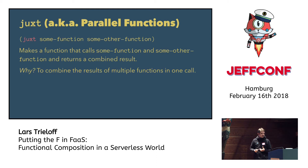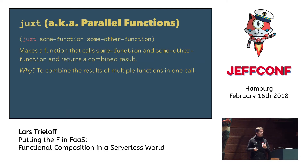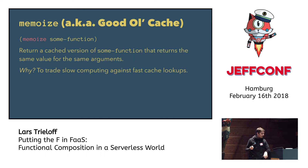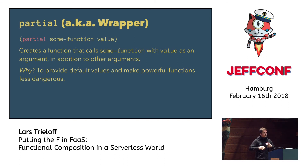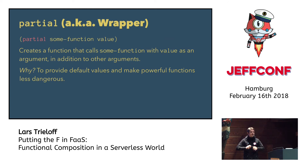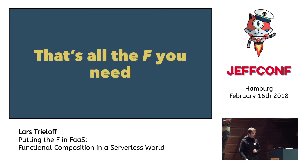We have juxt, which takes two functions and executes them in parallel so you can combine the results of multiple function calls in one single call. Whenever you do all this, you want to increase performance — which is what Clojure calls memoize, and what we call good old caching. Finally, we have the partial function: partial takes an existing function and calls it with a preset value, so you can take a very powerful and flexible function and turn it into something very specific, safe, and tailor-made. And that's all the F you need.